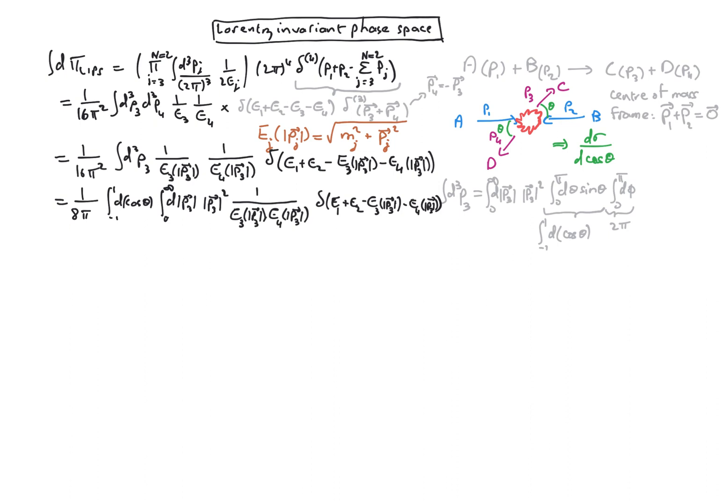We would like to kill the integral over p3 using the delta function, but the delta function depends on quantities which are functions of p3 and not directly on p3, so we need to rearrange this delta function.